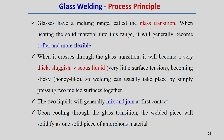Two liquids will generally mix and join at first contact. During the cooling phase, within the glass transition range, the welded piece solidifies and creates one solid piece of amorphous material. Glass is normally made of amorphous structure, such that melting or softening occurs over a wide range of temperature — that is called the glass transition temperature.